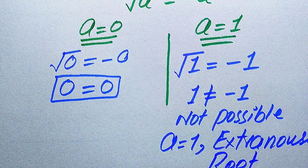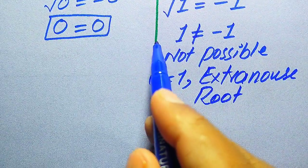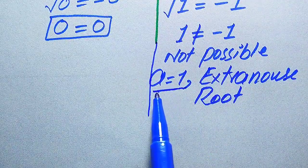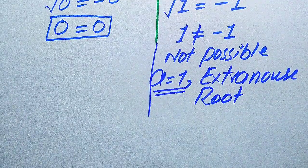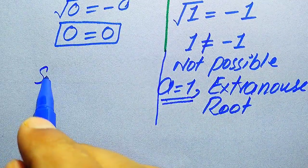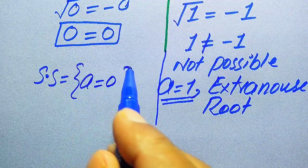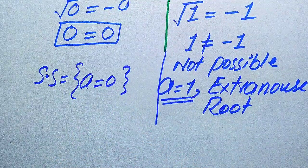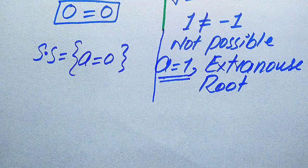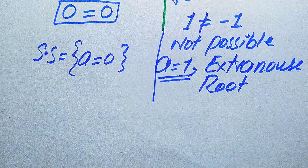This means A equals 1 is the extraneous root of the given equation. The root which does not satisfy our given question statement is called the extraneous root, so A equals 1 is the extraneous root. The solution set of this problem is A equals 0, because A equals 0 satisfies our given question statement. This is the final conclusion of the first method.